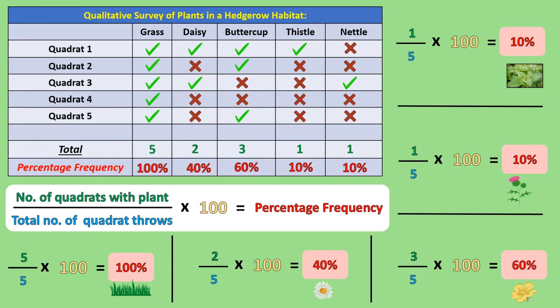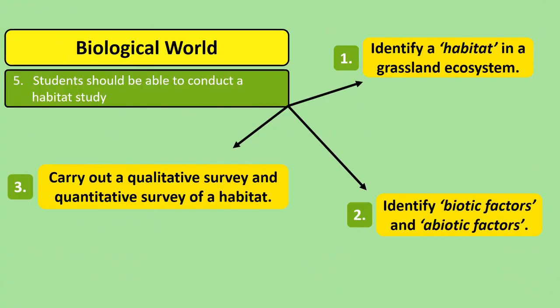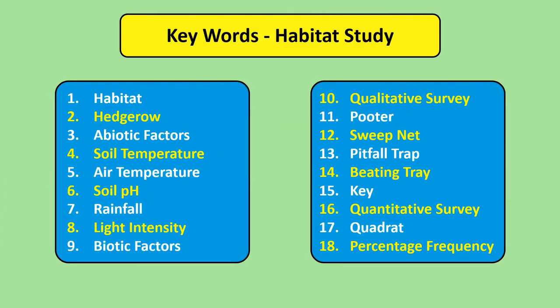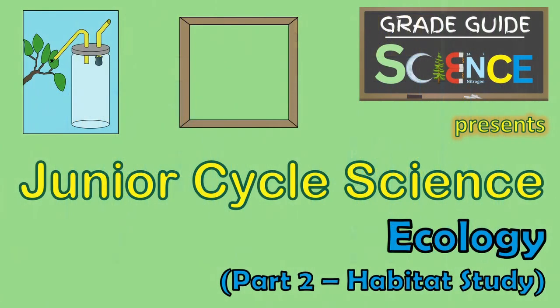Make sure you know the formula to calculate percentage frequency off by heart because it's important for your exams. So that's it for this video on ecology habitat studies. Make sure you've revised over each of these three points in preparation for your exams, and make sure you're familiar with each of the keywords you can see on the screen now. Thanks for watching this GradeGuide video. If you found this video helpful, please like the video and subscribe to the channel. Best of luck with your revision.